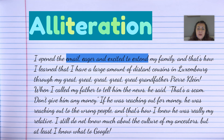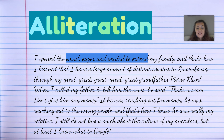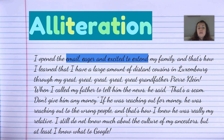'And that's how I learned that I have a large amount of distant cousins in Luxembourg through my great-great-great-great-grandfather, Pierre Klein. When I called my father to tell him the news, he said, that's a scam — don't give him any money. If my new cousin was reaching out for money, he was reaching out to the wrong people. And that's how I knew he was really my relative. I still do not know much about the culture of my ancestors, but at least now I know what to Google.' I found out I have relatives in Luxembourg — a tiny country I didn't know much about. I thought my family was French and German, and Luxembourg is right by France and Germany, so it kind of makes sense.